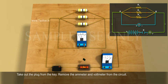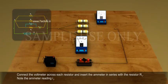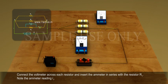Remove the ammeter and voltmeter from the circuit. Connect the voltmeter across each resistor and insert the ammeter in series with resistor R1. Note the ammeter reading I1.